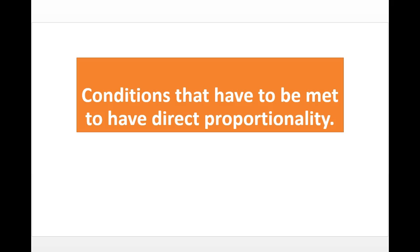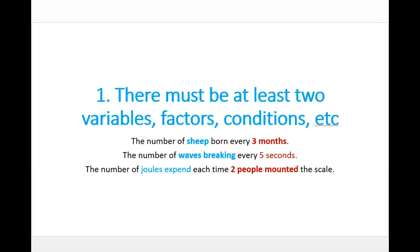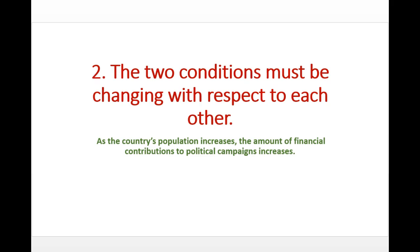In order for something to be directly proportional, what are the conditions that must be met? Number one: there must be at least two variables, or factors, or conditions. Here are some examples: the number of sheep born every three months, the number of waves breaking every five seconds, or the number of joules expended each time two people mount a scale. Those are just three random examples of two conditions.